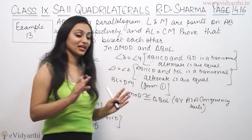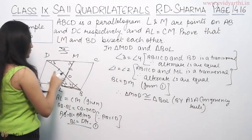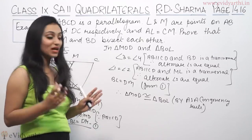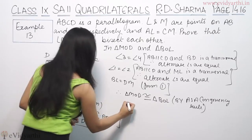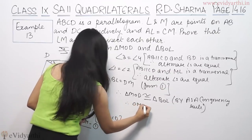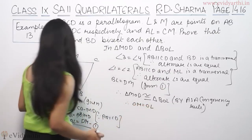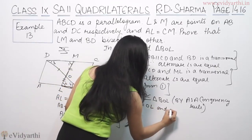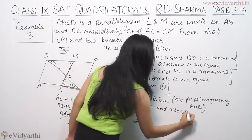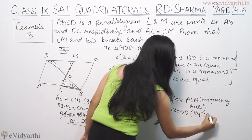So jab triangles congruent ho jayenge, CPCT se we can say that corresponding parts are equal. That means yeh is ke equal hai aur yeh is ke equal. Therefore OM is equal to OL and OD is equal to OB by CPCT.